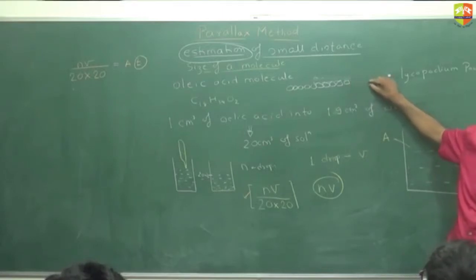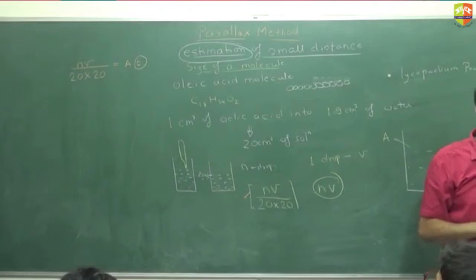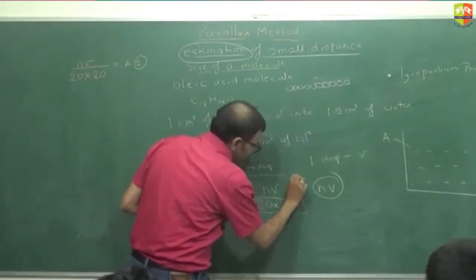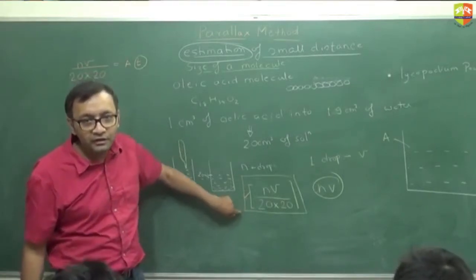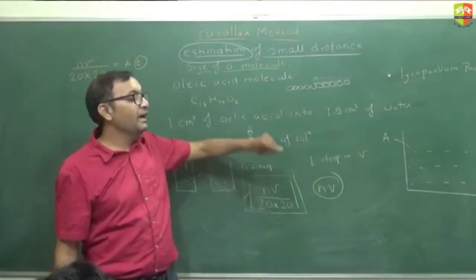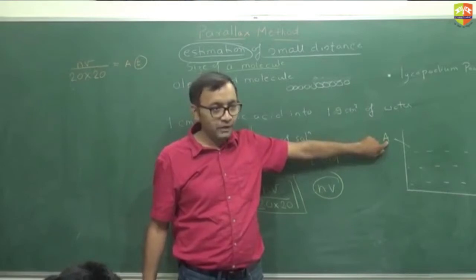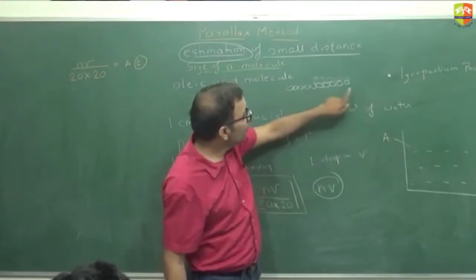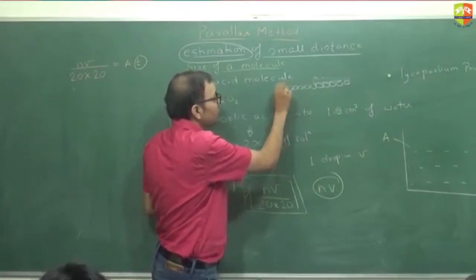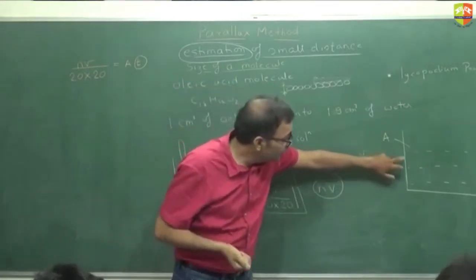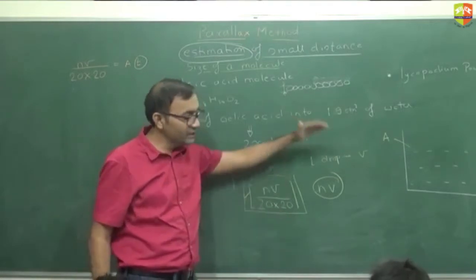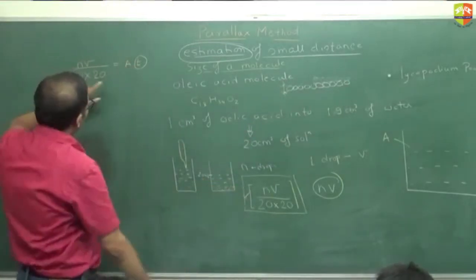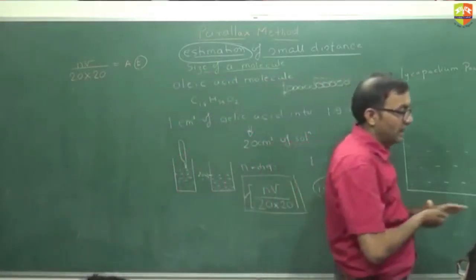Since it is a monomolecular layer, the thickness is equal to the diameter of the molecule itself. So: area × thickness = nV/400. Solving for thickness gives the diameter of the oleic acid molecule. We equate area times thickness with the volume of oleic acid to get the thickness, and that thickness is the size of the molecule.